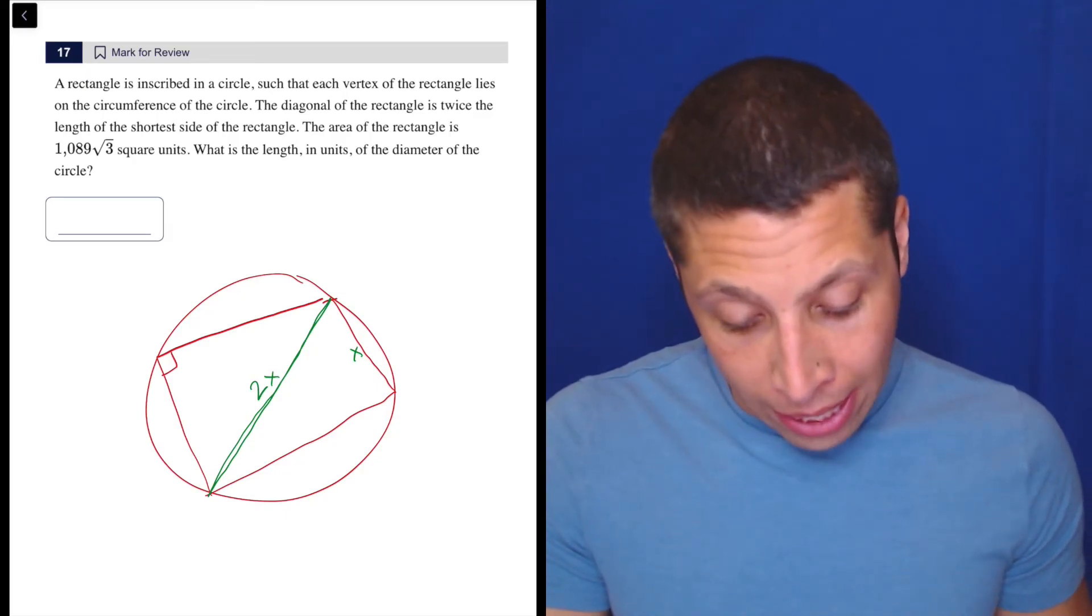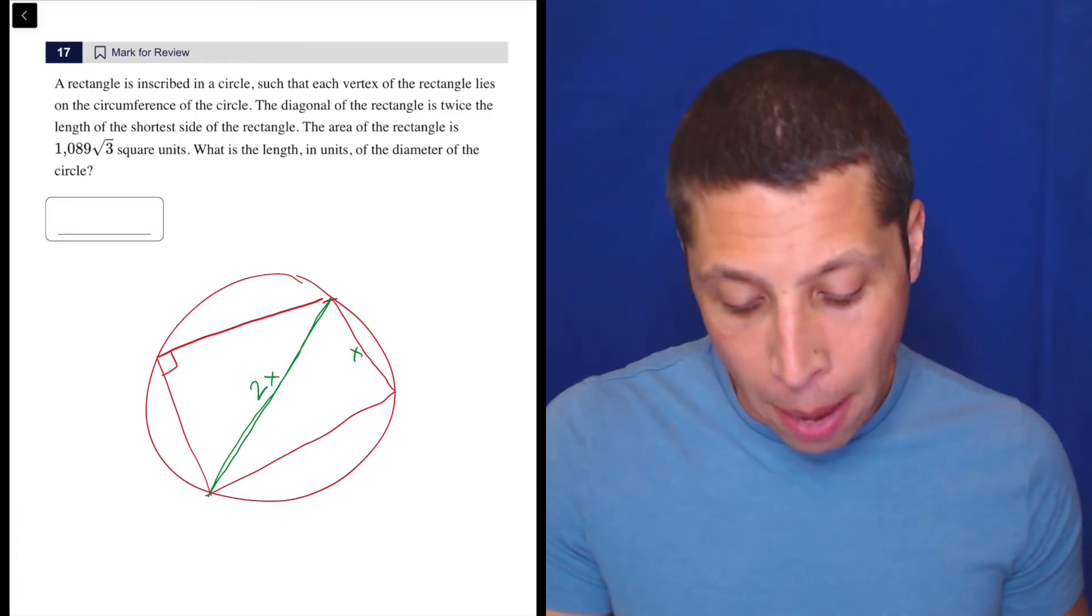The area of the rectangle is 1089 root 3 square units, so we'll deal with that later. Okay, what is the length in units of the diameter of the circle?